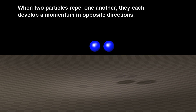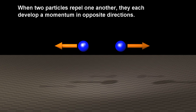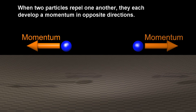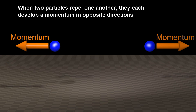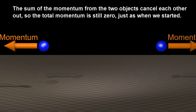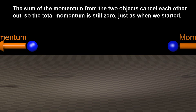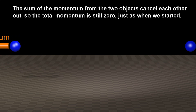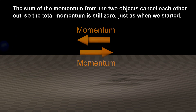When two particles repel one another, they each develop a momentum in opposite directions. The sum of the momentum from the two objects cancel each other out, so the total momentum is still zero, just as when we started.